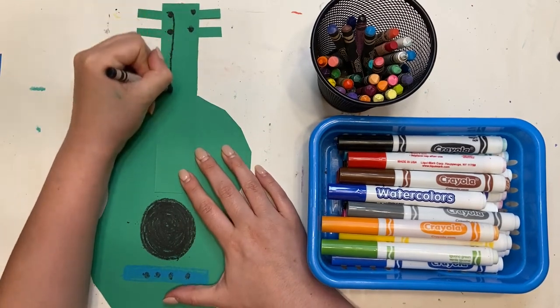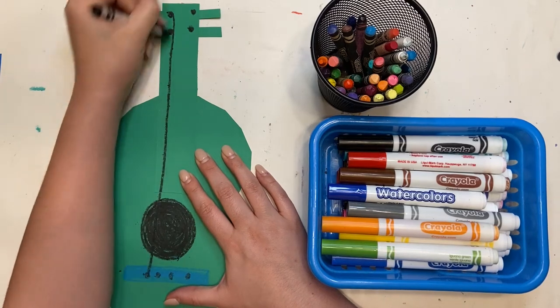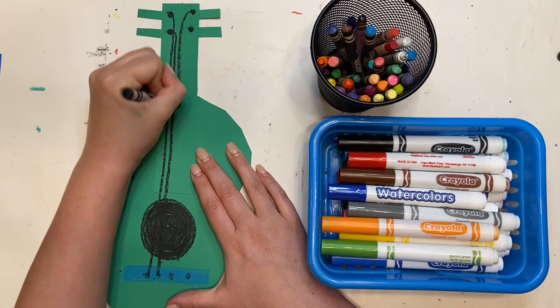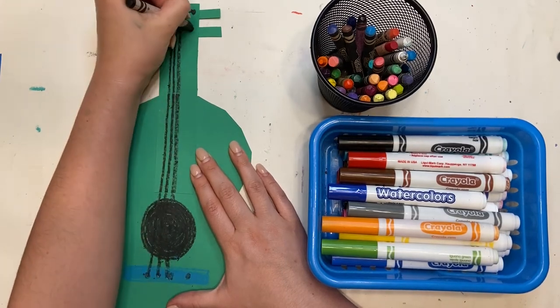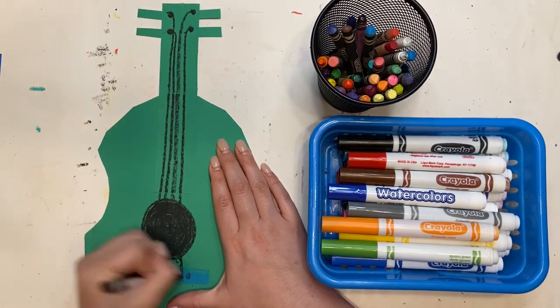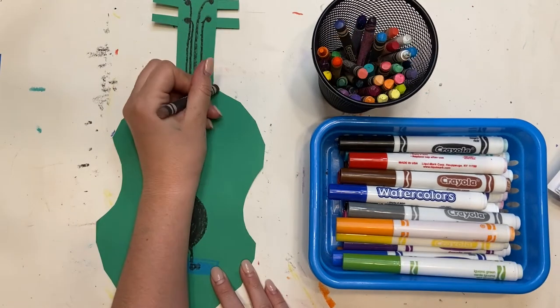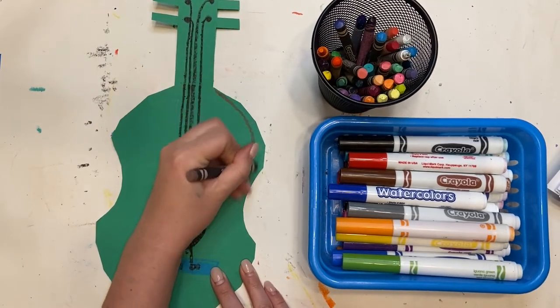This part's a little tricky, so do your best. Once you've drawn four dots up at the top, you're gonna connect with a long straight line going down the neck of your guitar and try to match it up with those dots. If it's not perfect, that's okay. We want either four or six dots.